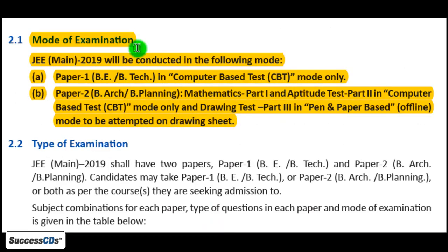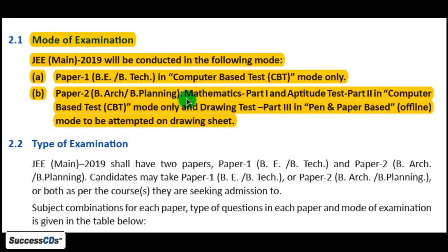Another important thing is the mode of examination. Paper 1 for BE and B.Tech will be conducted in computer-based test mode only. For Paper 2 — B.Arch and B.Planning — mathematics (part 1) and aptitude test (part 2) will be in computer-based test mode. The drawing test (part 3) will be in pen and paper-based offline mode.